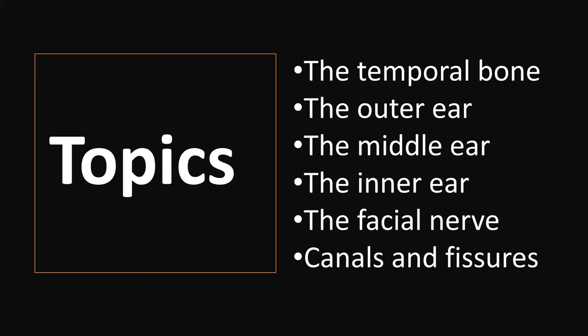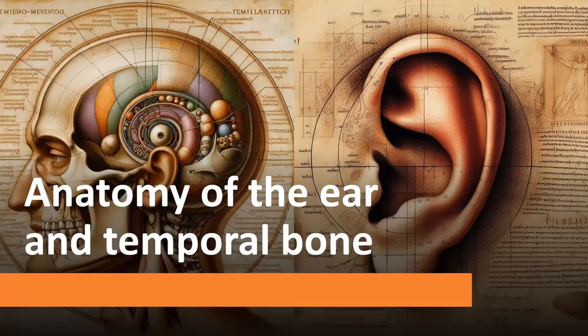I'm going to talk about the anatomy of the temporal bone — the gross anatomy — specifically the anatomy of the outer ear, middle ear, and inner ear. We're going to talk about the facial nerve, which courses through the temporal bone. And lastly, we're going to talk about some very small canals and fissures that you shouldn't mistake for fractures or other pathological entities. So let's get started with the gross anatomy of the temporal bone.